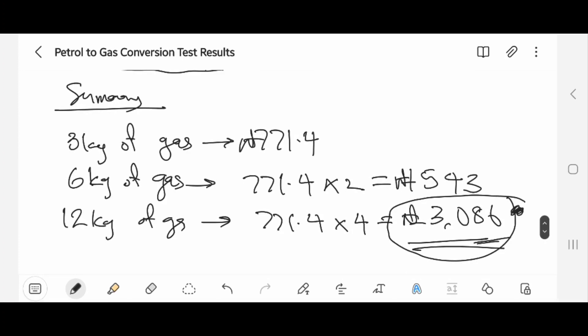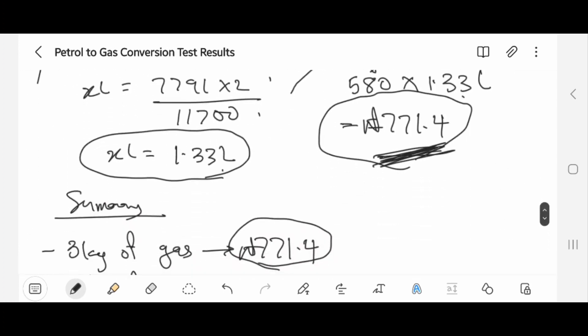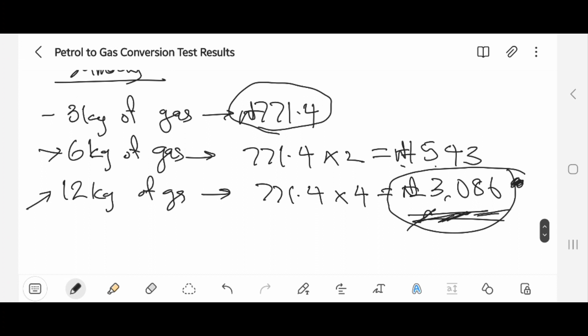Let's go to the summary. That means 3kg of gas will save you 771 naira. If you are using 6kg, it will save you times 2, which is 1,543 naira. If you are using 12kg of gas, that means it will save you times 4, which is 3,086 naira. It means if you are using 12kg of gas, for every time you reload your 12kg compared to you using petrol, gas is saving you 3,086 naira. That is the summary of my test.